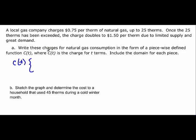Let's see what we have. The first part says that we have 75 cents up to 25, and it says once 25 is exceeded, then it changes. So that means it's going to include the 25. So we have 0.75 times X, that would be the 75 cents per therm, but the domain is going to be from 0, including 0, up to and including 25. And then it says once it has exceeded that, the charge doubles to $1.50 per therm.